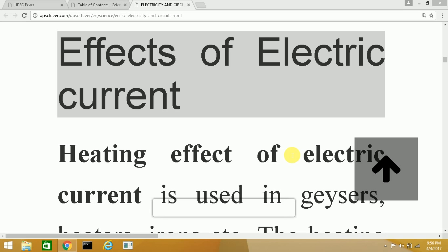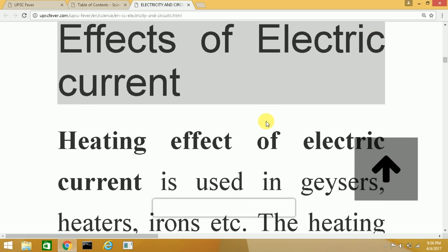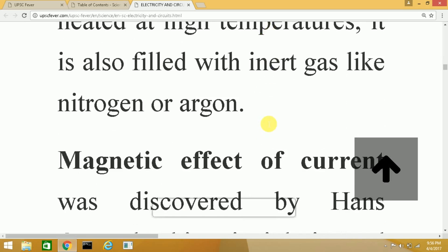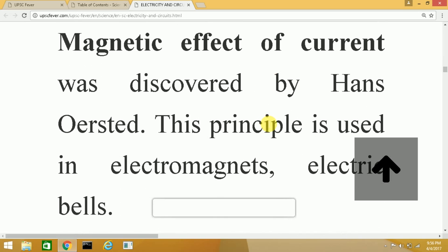The magnetic effect of electric current, which is the next topic, was discovered by a scientist called Hans Oersted and this Oersted principle is used in electromagnets as well as electric bells.